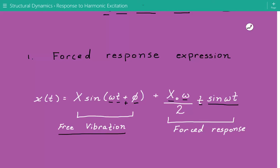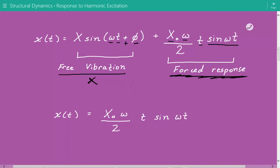Here's the mathematical expression for the displacement of the mass under this resonance case. It's x times sine of omega t plus this phase angle, plus x sub o times omega divided by 2 times t times sine of omega t. This expression has two terms: one is a free vibration term describing the motion without any forcing function, and the forced response describing the displacement due to the harmonic force. We'll simplify and only consider the force response.